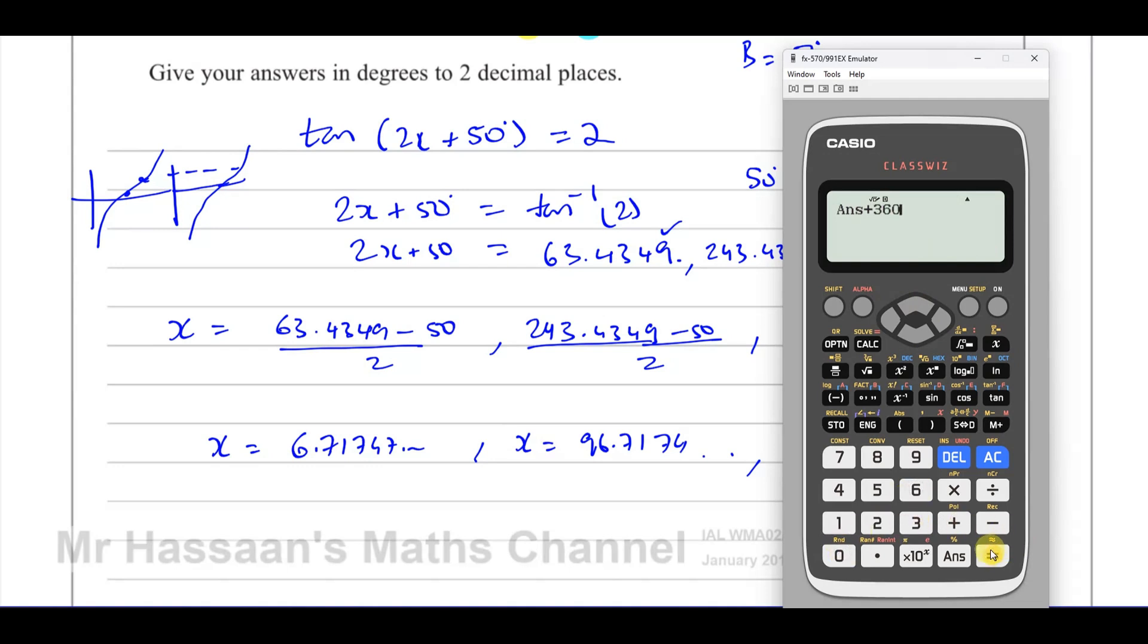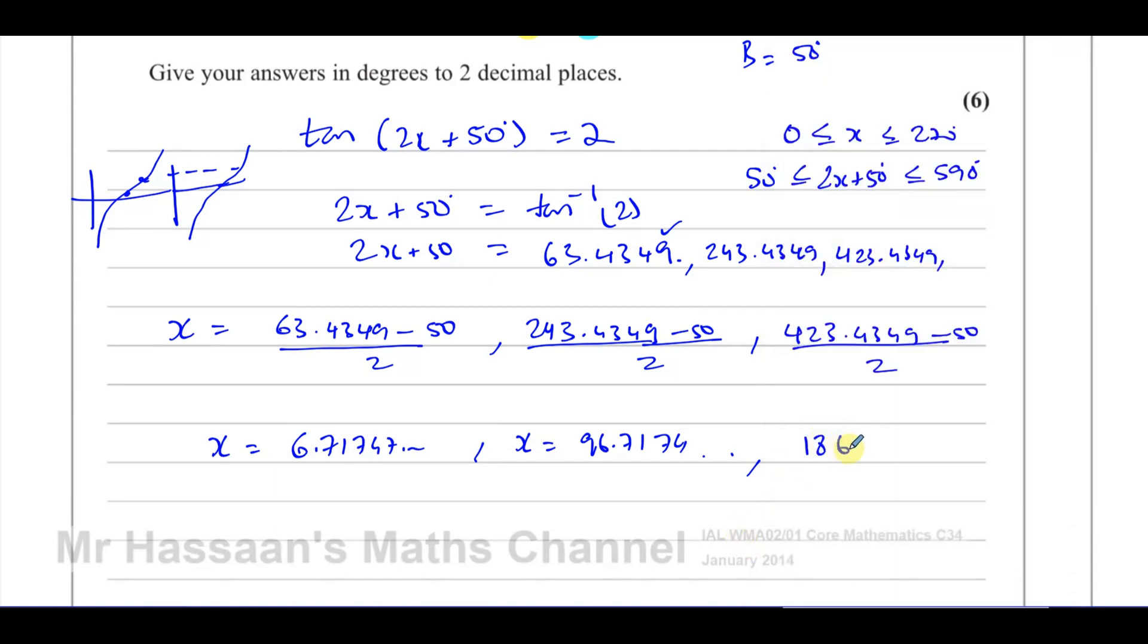And then we have finally this last one. So we go back to this answer, we add 180 to it. 180 plus 180 gives us 423. So we have this answer minus 50 divided by 2, which gives us 186.7174.